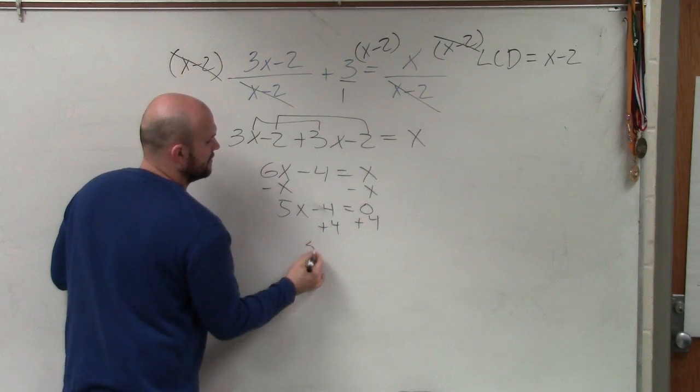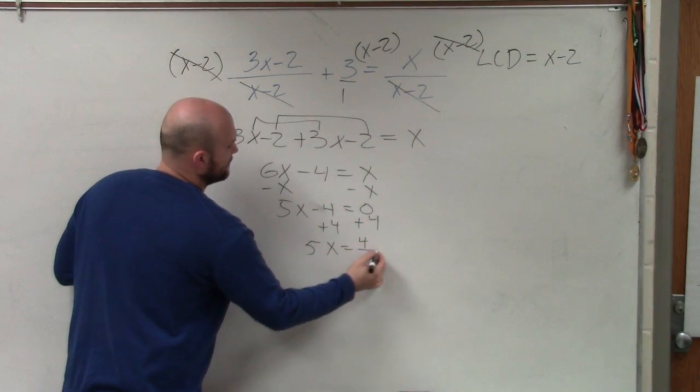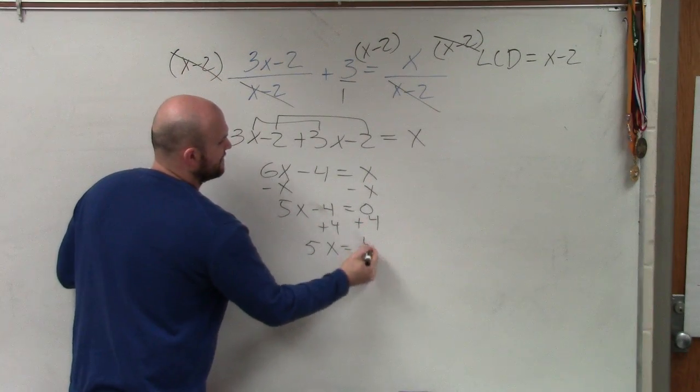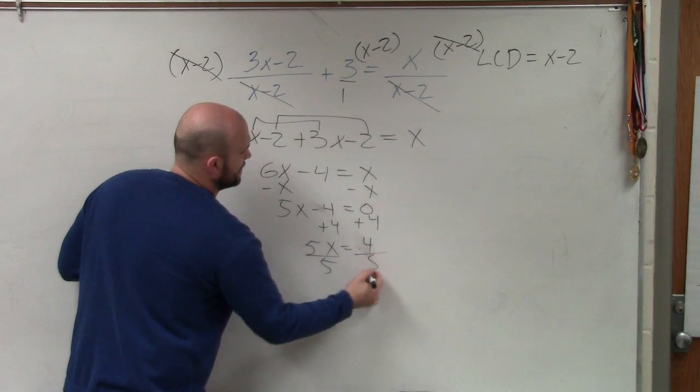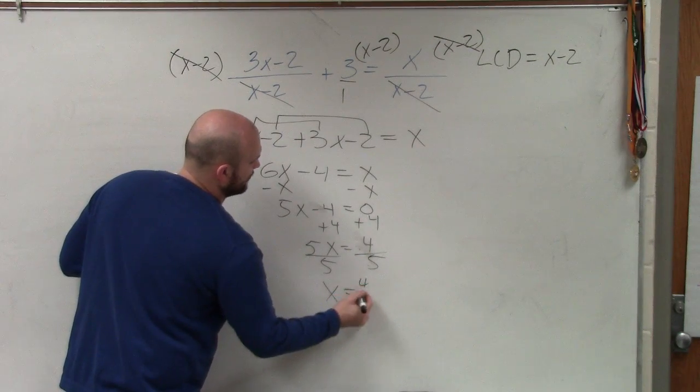Add 4, add 4. 5x equals 4 divided by 5 divided by 5. x equals 4 fifths.